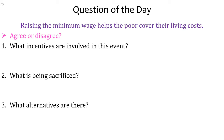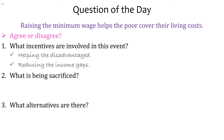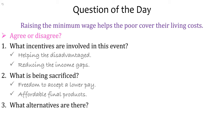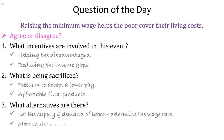For minimum wage, two incentives could be helping the disadvantaged and reducing income gaps. What is being sacrificed could be the freedom to accept a lower pay if someone wants that, and affordable final products. What alternatives are there? We can let the supply and demand of labor determine the wage rate, and we can have no discrimination, which leads to a more equitable society.